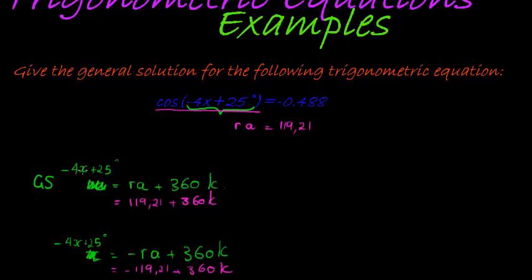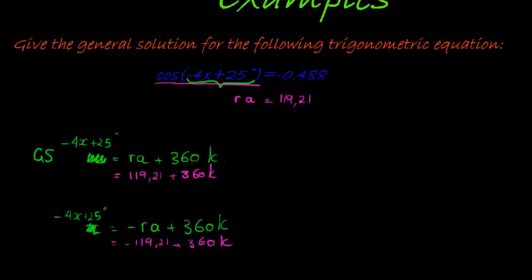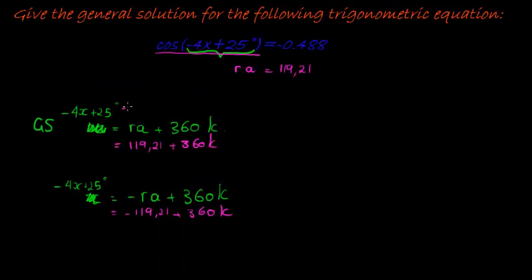And now the aim is to solve for x, to get x on its own. To do that, I need to subtract 25 on both sides. For both equations, I subtract 25 on both sides, and that means I'm left with negative 4x is equal to, if I subtract 25 from here, what do I get? 96.21 plus 360 times k.